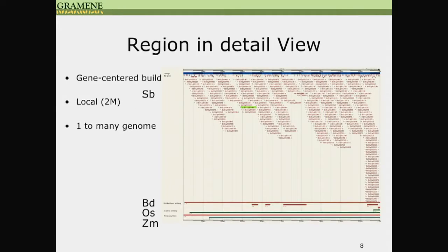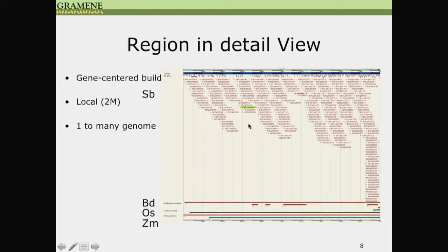The next view is region in detail view. It serves the same type of data — gene-based synteny build — but shows a more local view. In this case, a 2 megabase region of sorghum chromosome 1. However, in addition to one-to-one, it can show one-to-many genome relations. In this example, we can see synteny regions in three other genomes: Brachypodium, rice, and maize.